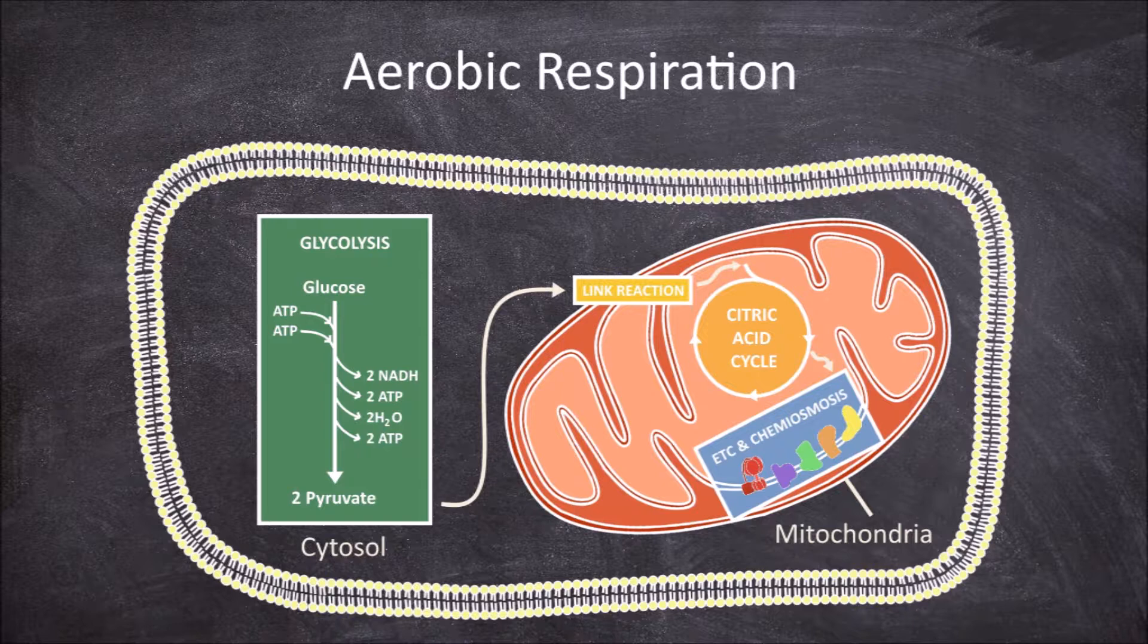In this video, we are going to look at the second step involved in aerobic respiration, the link reaction. This is the step that links the pyruvate made in glycolysis with the acetyl-CoA that enters the citric acid cycle.